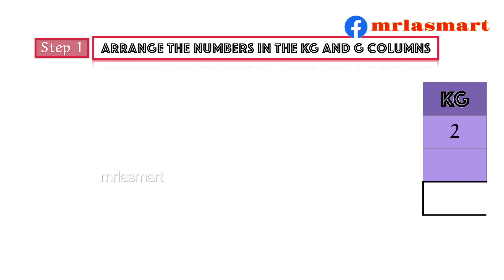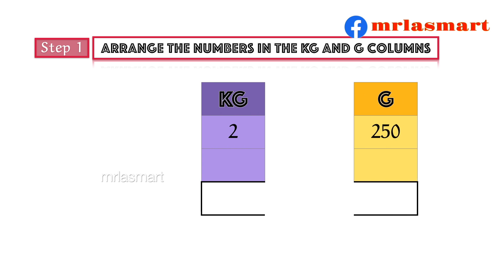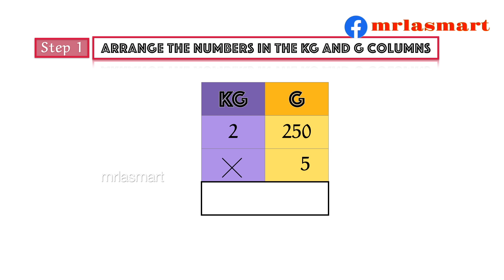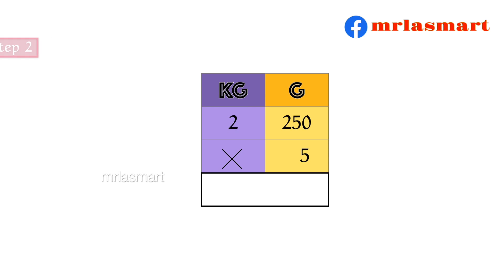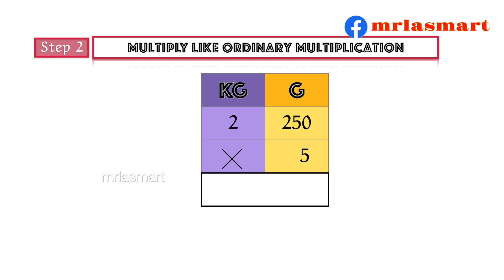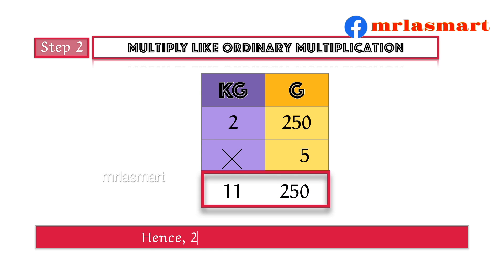Step 1: Arrange the numbers in the kilogram and gram columns. Step 2: Multiply like ordinary multiplication. Hence, 2 kilograms 250 grams multiplied by 5 equals 11 kilograms 250 grams.